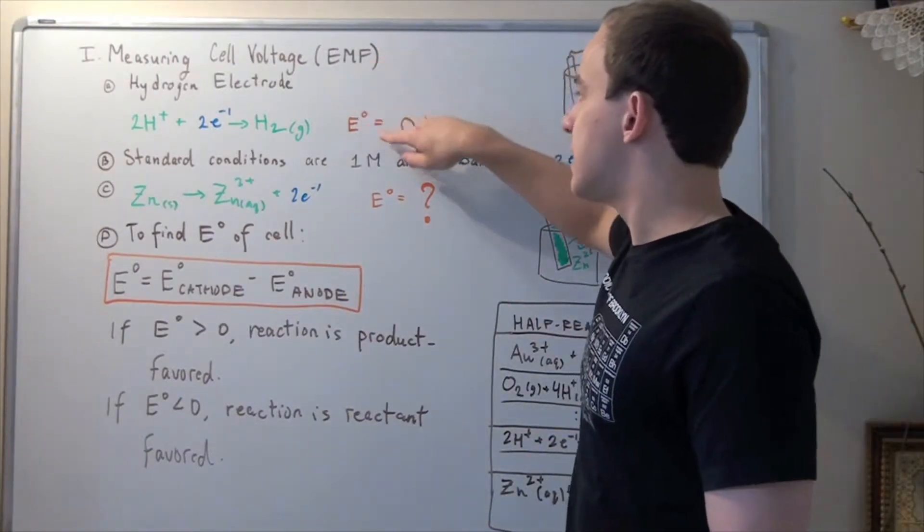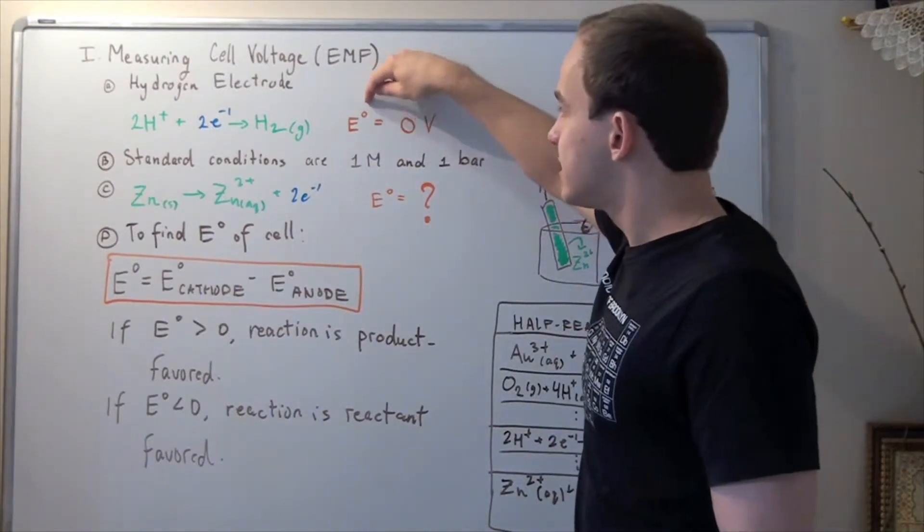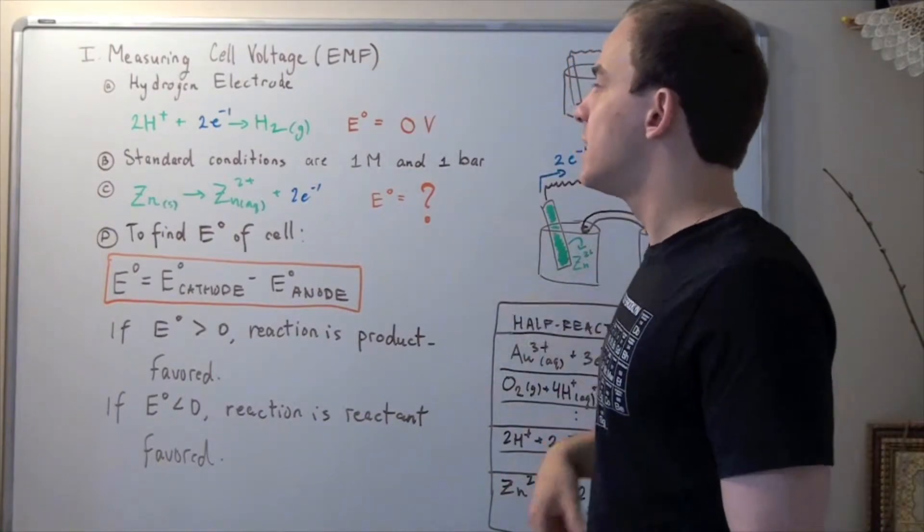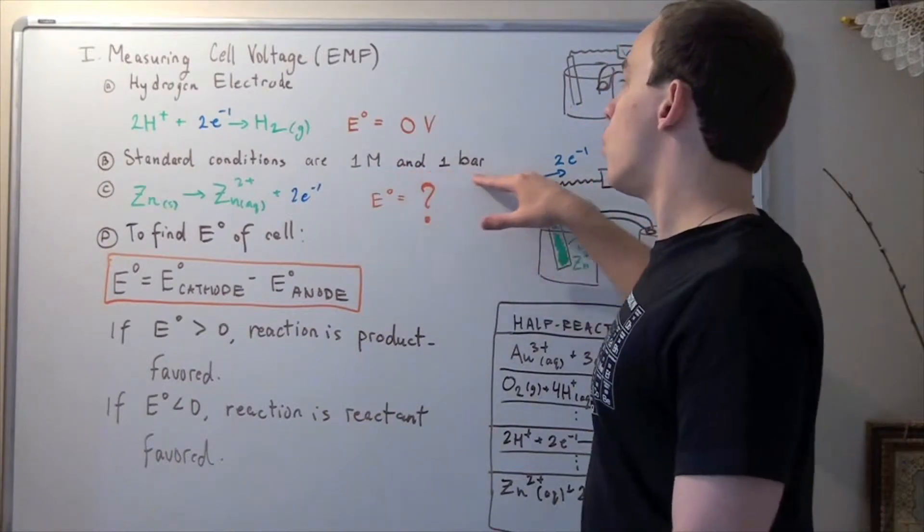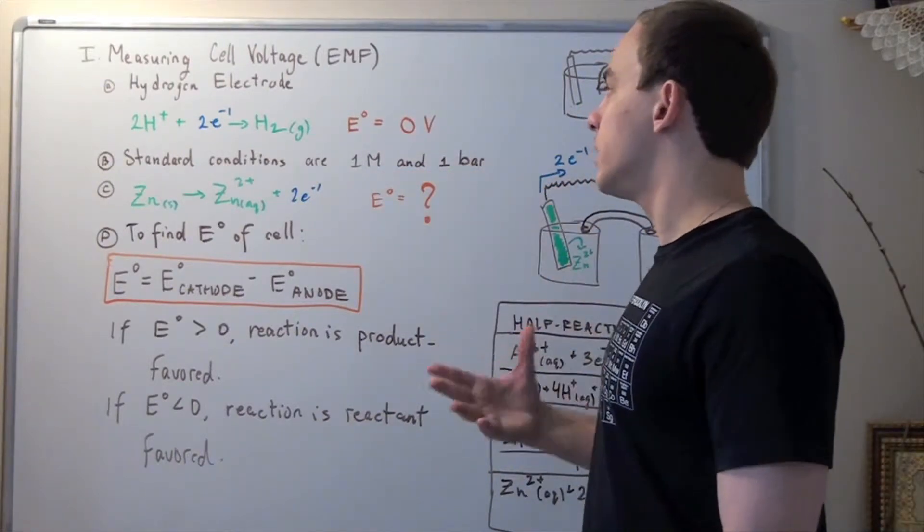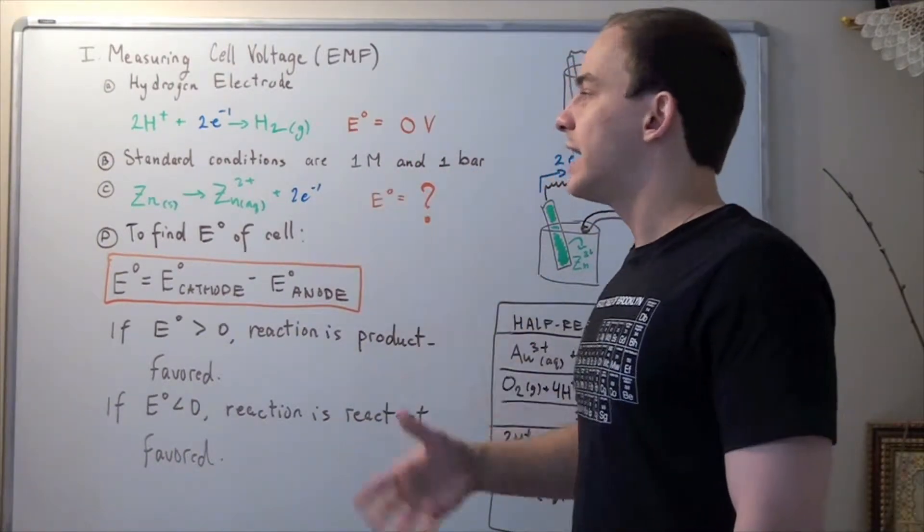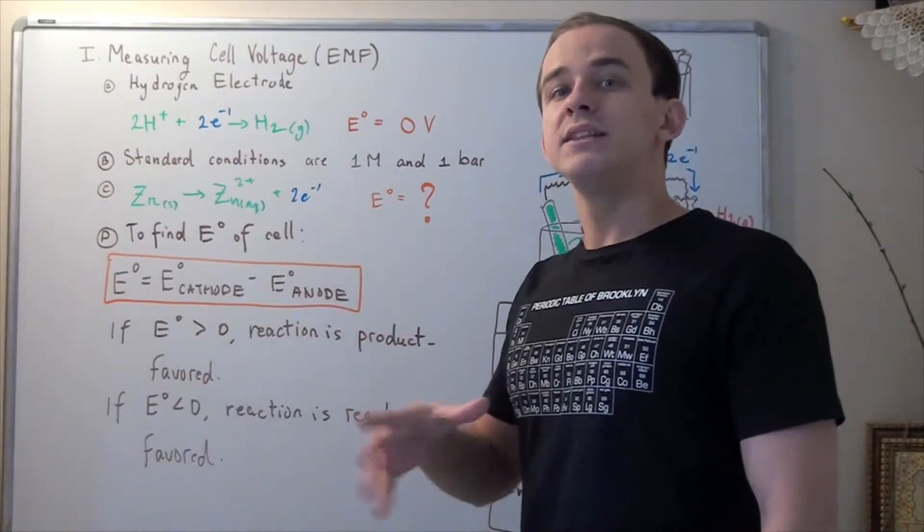Now this E represents our cell voltage. This sign on top, little zero on top, stands for our standard conditions of one molar concentration and at one bar pressure. Now normally, these reactions occur at 25 degrees Celsius, but they don't have to.